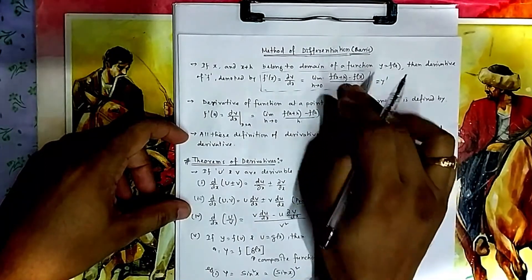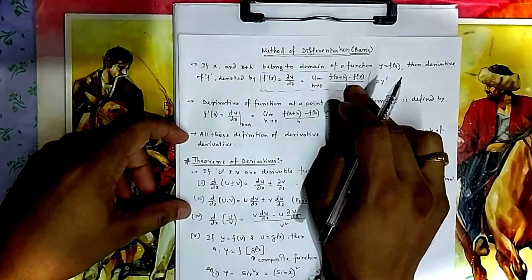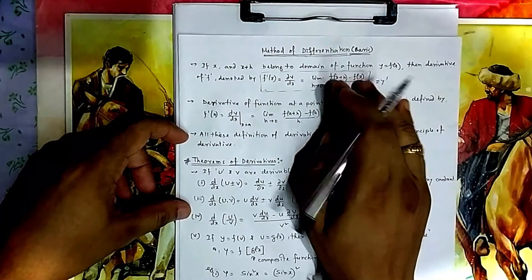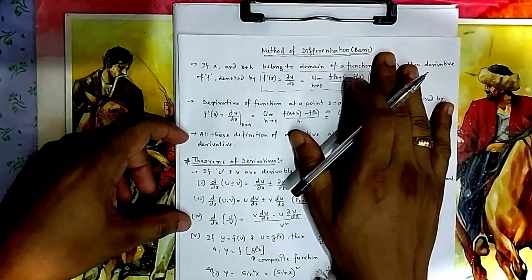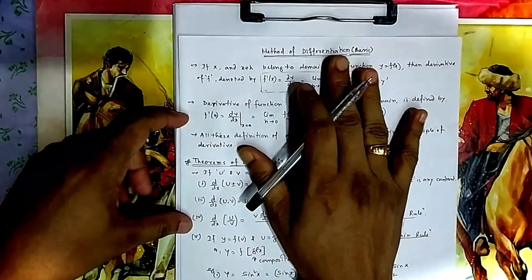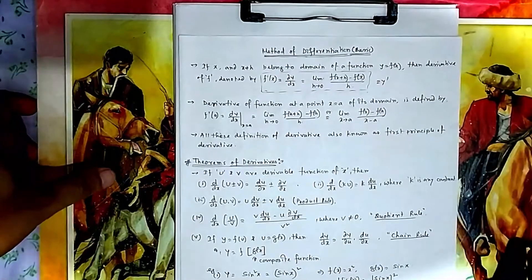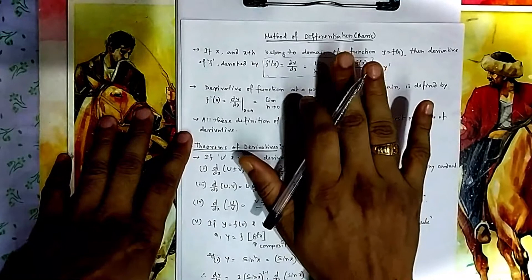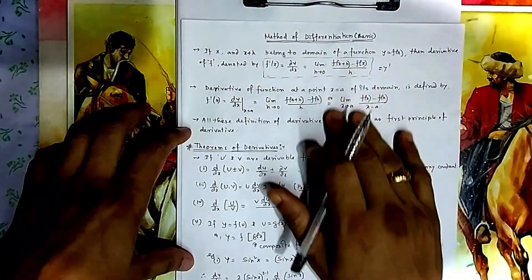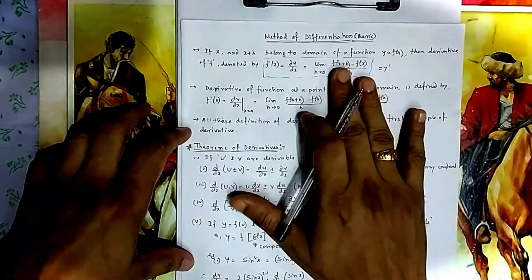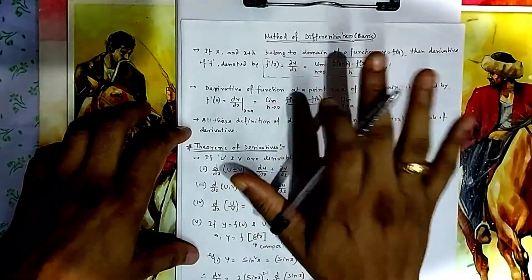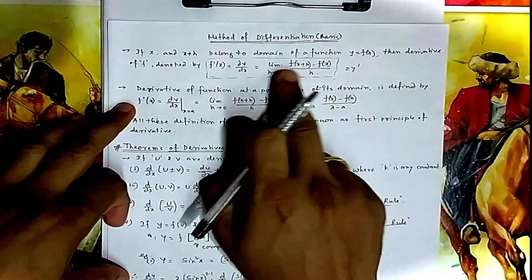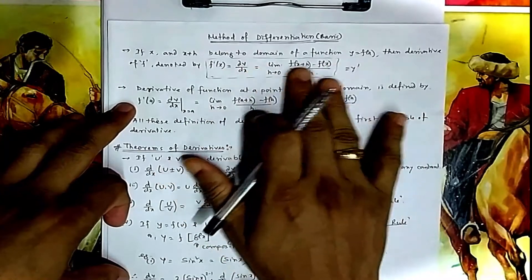This graphical representation represents lots of things that come under application of derivatives, which we are not doing here. We are doing just method of differentiation — how to differentiate. One application is that it represents the tangent, as we considered in differentiability. The derivative of a function is, in general, dy/dx at any arbitrary point x.